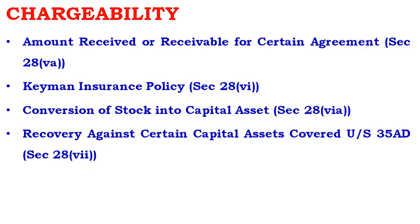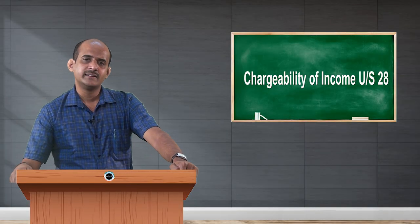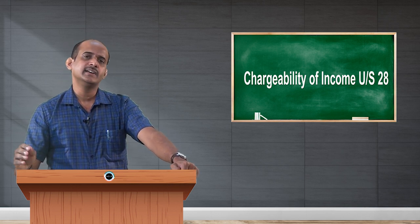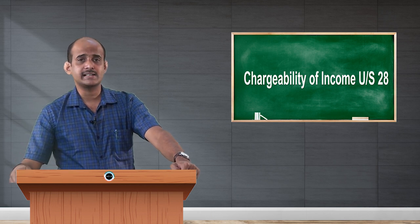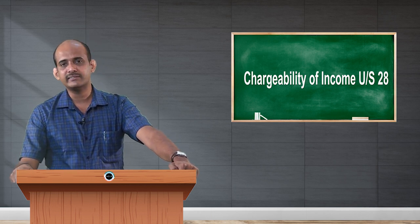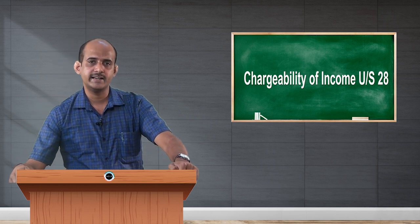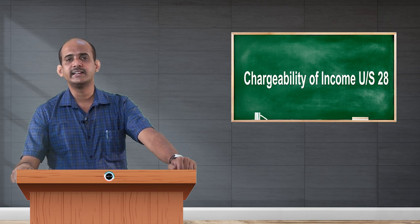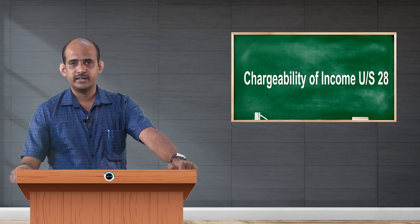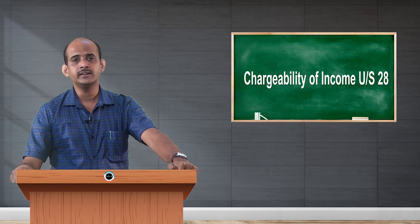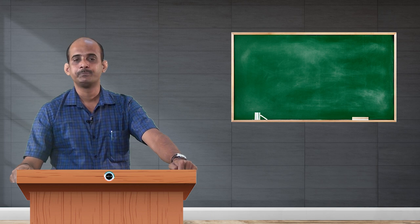The last one is recovery against certain capital assets covered under section 35AD. Section 35AD is a very important section under the Income Tax Act. There are certain assets which are regarded as capital assets and deductions are also available for these sections when calculating income from business and profession. On these certain categories of assets falling under section 35AD, if any recoveries are made, then such recoveries are regarded as income from business and profession. These are the incomes which are 100 percent eligible to be treated as income from business and profession under section 28 of the Income Tax Act of 1961. I have covered another important topic under the head business and profession. Moving on to the next video, where I will be explaining about incomes which are not eligible to be treated as income from business and profession. Thank you.